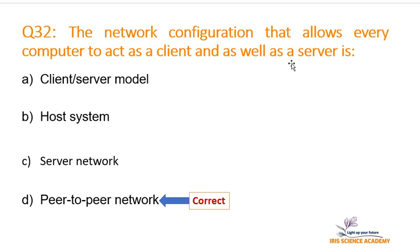We have option A: Client-Server Model, option B: Host System, option C: Server Network, and option D: Peer-to-Peer Network. We are talking about the network configuration that allows every computer to act as a client as well as a server. The correct option is D, but we will discuss them one by one.